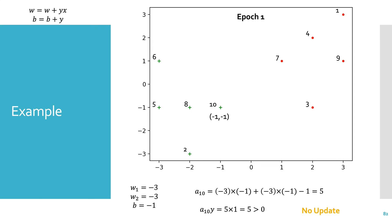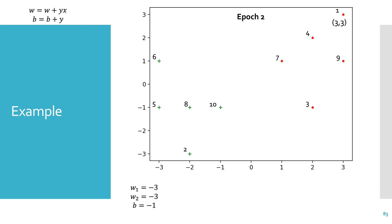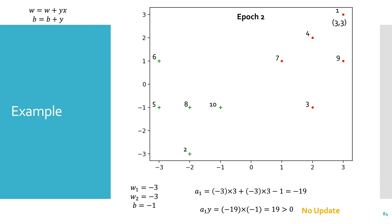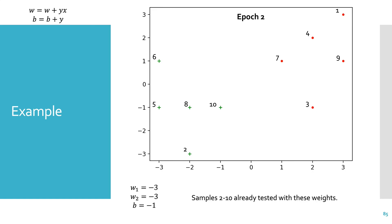We have completed our first epoch by reviewing every sample. The algorithm converges once we complete a full epoch without updating the weights and bias. In epoch 2, back to sample 1: the activation is -19. Negative 19 times label -1 gives 19, greater than 0, so no update. Samples 2 through 10 were already tested with these weights, so that's a full epoch of no updates. The algorithm converges with these weights and bias.